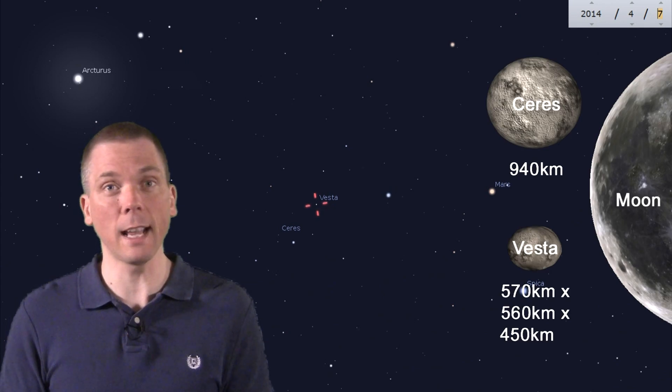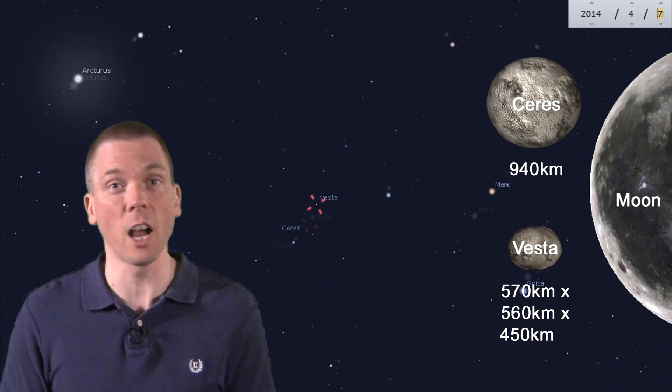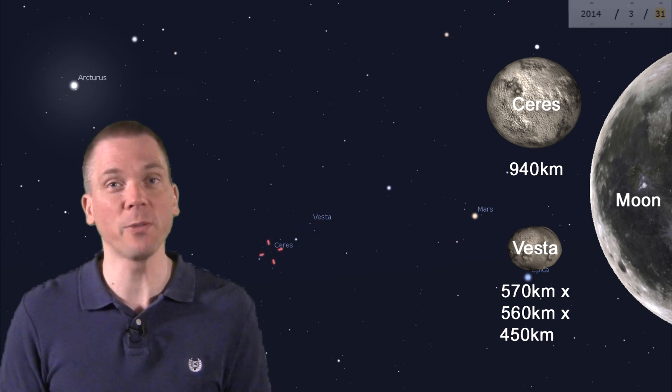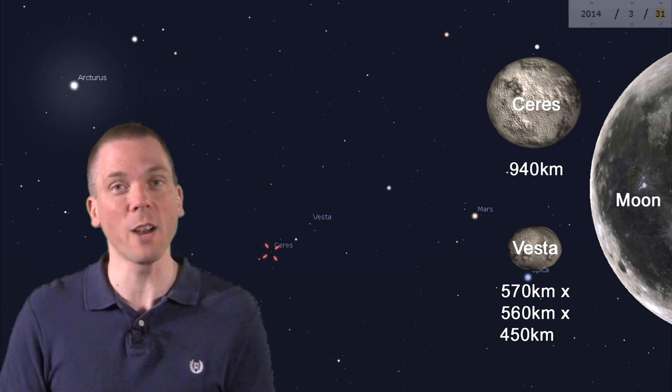We also have fantastic close-up photos of Vesta thanks to NASA's Dawn mission, though this asteroid is far too small and far away for us to see anything other than its reflected sunlight. But at magnitude 6, it shouldn't be difficult to find or see with the most basic of optical aid.